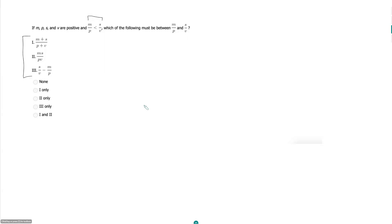So we know this to be true. Can we do anything with this? We know all of our variables are positive, so we don't have to worry about flipping the sign with any inequality. So this is telling us m times v is less than s times p. I don't know if that will necessarily be helpful.